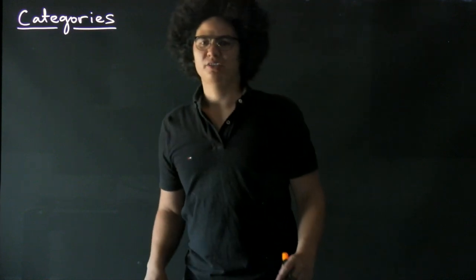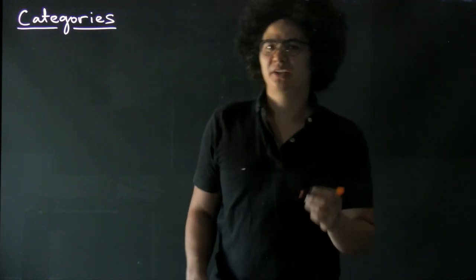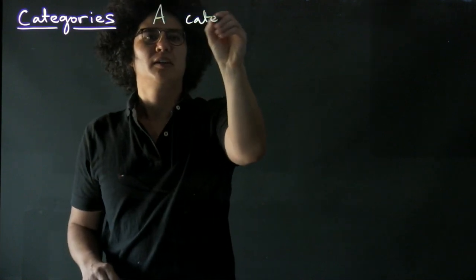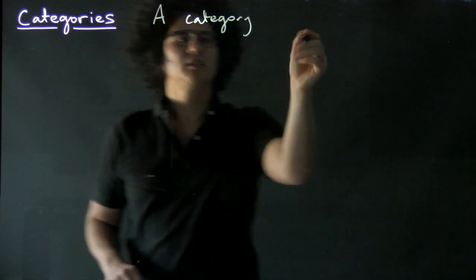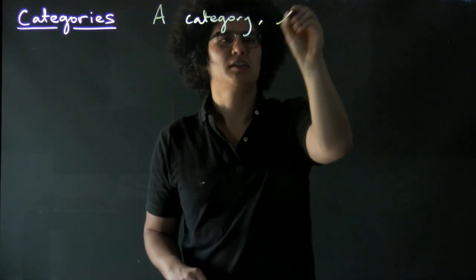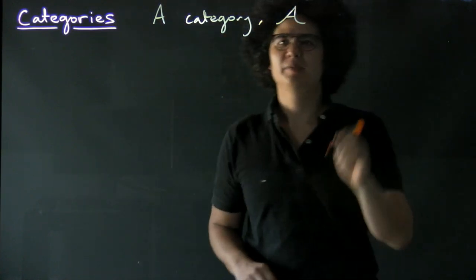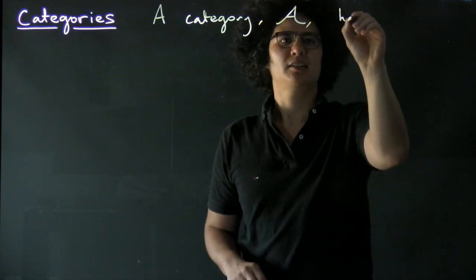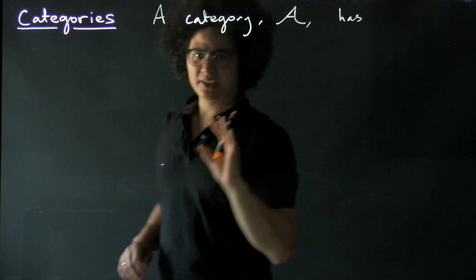Now that we've seen some examples of categories, we're actually going to define what a category is. So a category, which we might name say curly A, has a collection of objects.